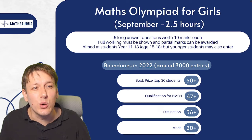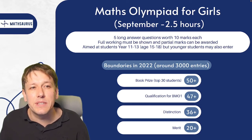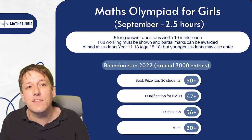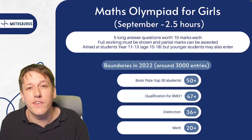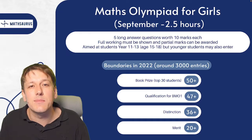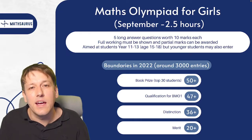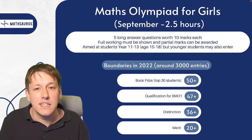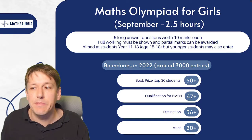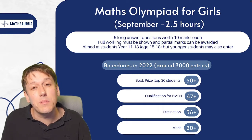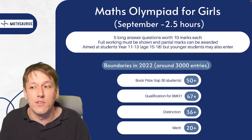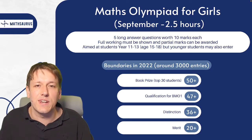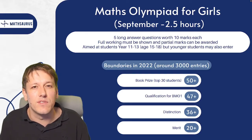Before moving on, I also want to mention the Mathematical Olympiad for Girls. This competition has been designed to address the under-representation of female students in maths and in the IMO in particular. It gives girls in years 11 to 13 — although younger students are welcome — a chance to try Olympiad-style problems that are slightly less challenging than those for the BMO. The paper has five questions worth 10 marks each, split into sections. Importantly, it's an alternative route to qualify for BMO round one, and book prizes are available for the top students.